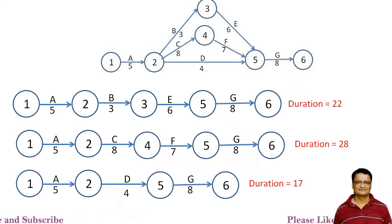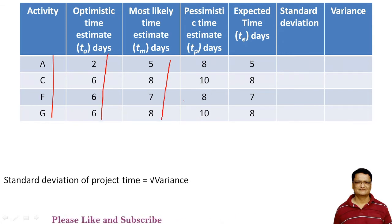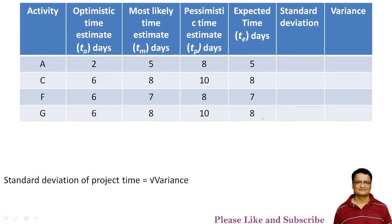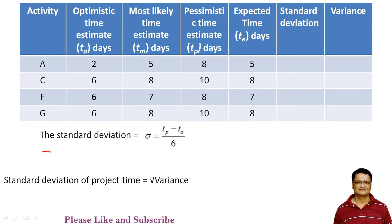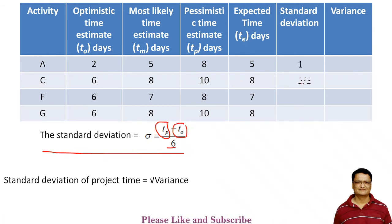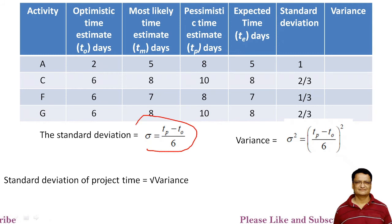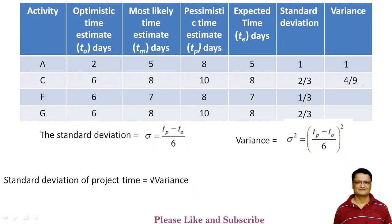For further computations, we consider only critical path activities A, C, F, and G. For each of these activities, we compute the standard deviation using the formula: σ = (T_p − T_o) / 6. The variance is the square of the standard deviation, giving us the variance values for each critical activity.